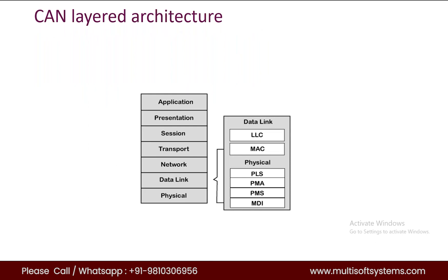This is the CAN layered architecture. If you look at the OSI model, it is divided into seven layers: application, presentation, session, transport, network, data link, and physical layer. CAN uses only two of these layers: the data link layer and the physical layer. The data link layer is responsible for node-to-node data transfer — it establishes and terminates connections, and is also responsible for detecting and correcting errors that may occur at the physical layer.